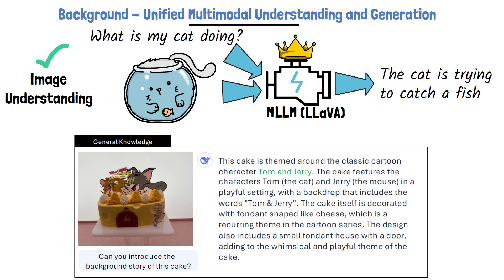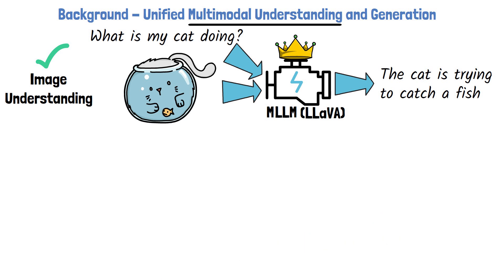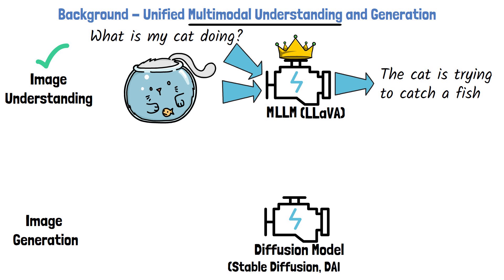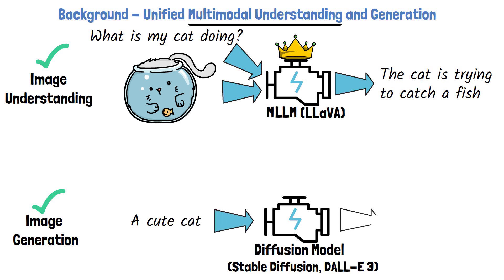Another popular domain is image generation. Image generation models are typically based on diffusion model architectures or their descendants. Known models include Stable Diffusion and others, which have already shown remarkable capabilities in this domain. These models can take a text prompt, such as 'a cute cat,' and generate a high-quality image. With this, we've covered the generation aspect, and we now have an idea of what a unified approach means.